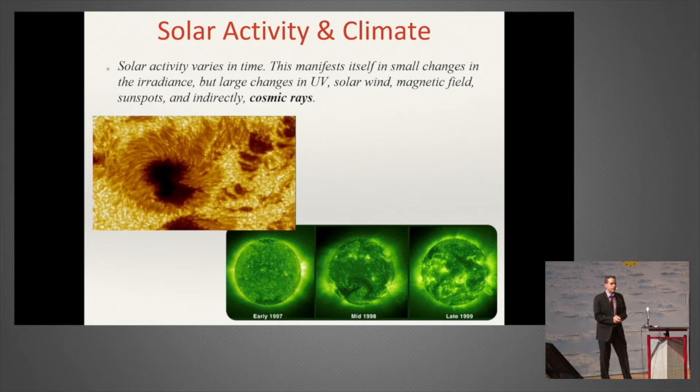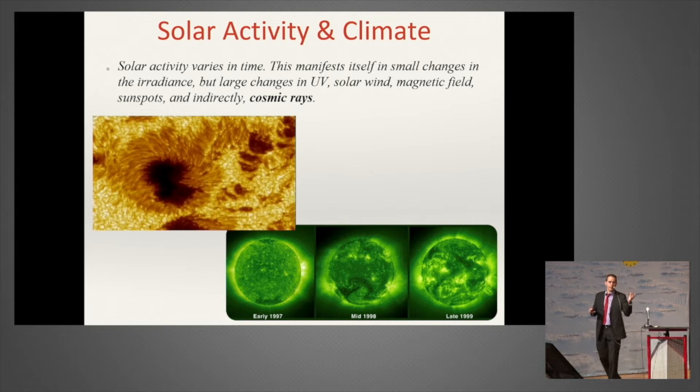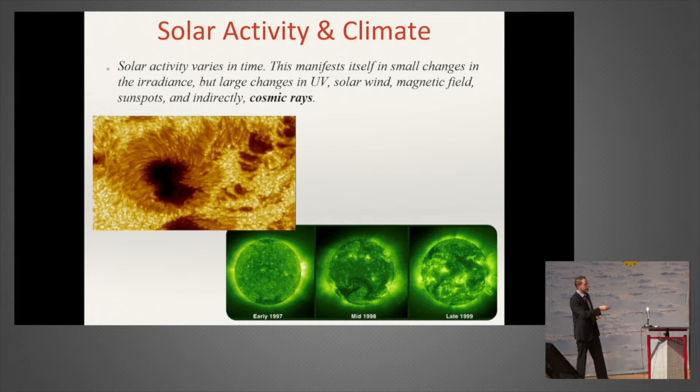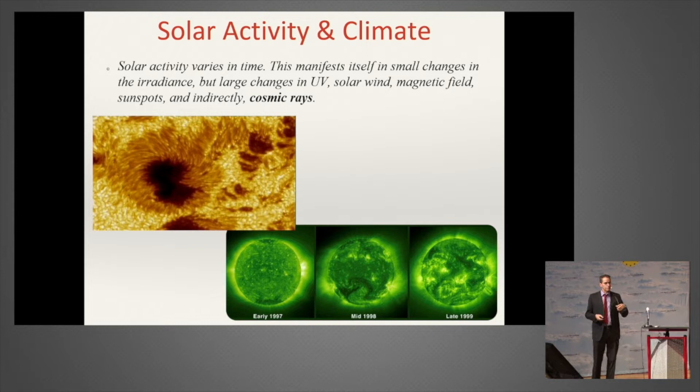First of all, we have to realize that the sun changes its activity. We can see that, for example, in the number of sunspots. This change in activity manifests itself in the change in the solar wind, in the amount of UV that outputs from the sun, and so forth. It turns out that these changes in activity translate into large changes in the climate here on Earth.